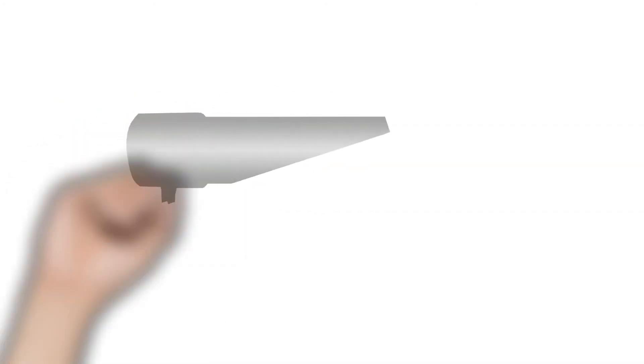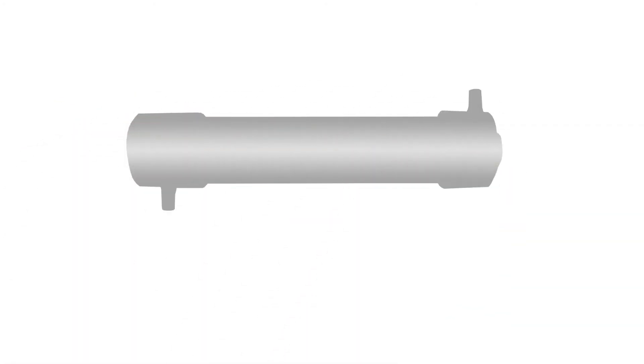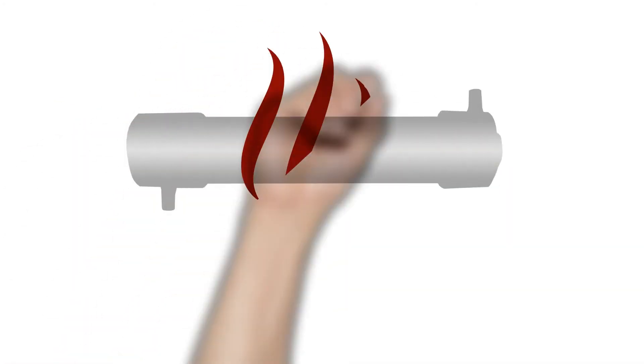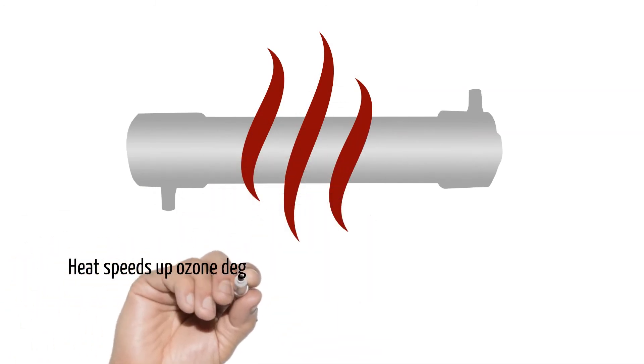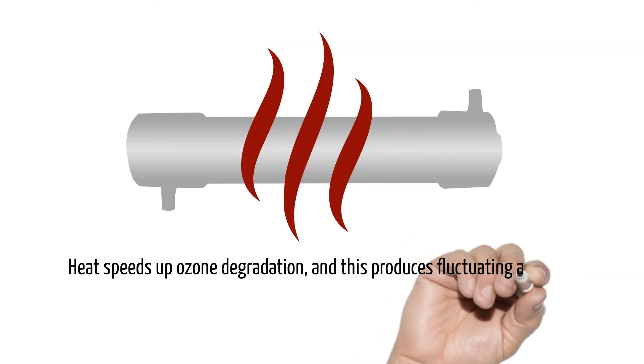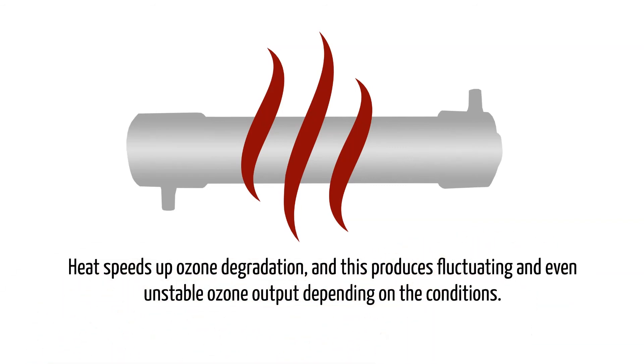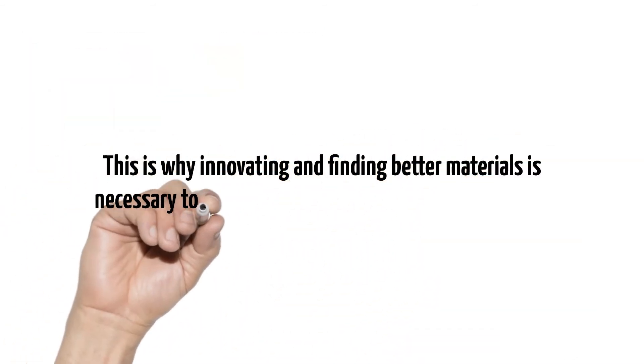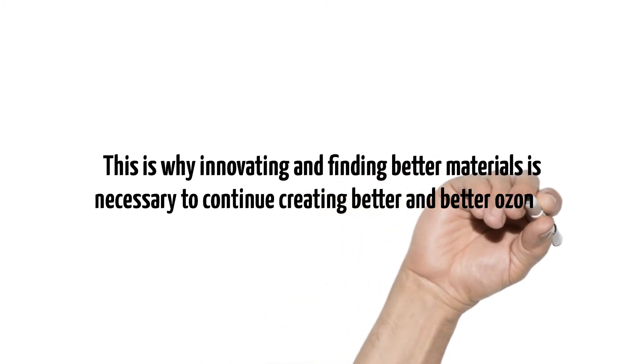As we mentioned earlier, glass electrodes retain a lot of heat from the electric field due to the thermal conductivity of that material. As we know, heat speeds up ozone degradation and this produces fluctuating and even unstable ozone output depending on the conditions. This is why innovating and finding better materials is necessary to continue creating better and better ozone.